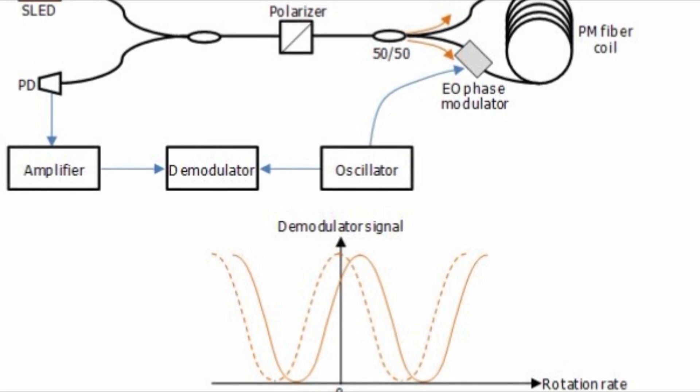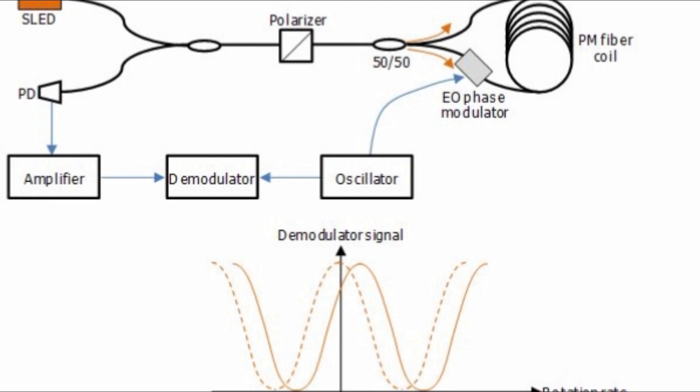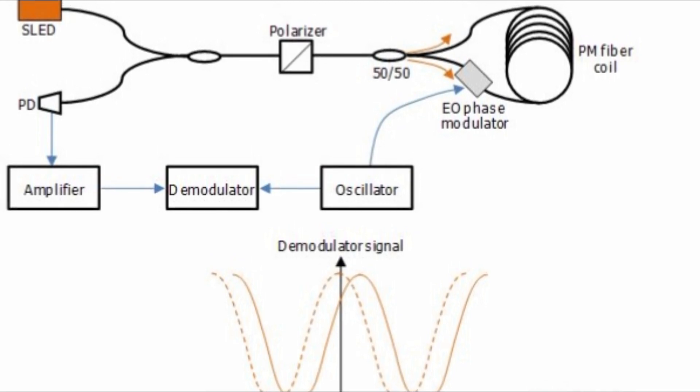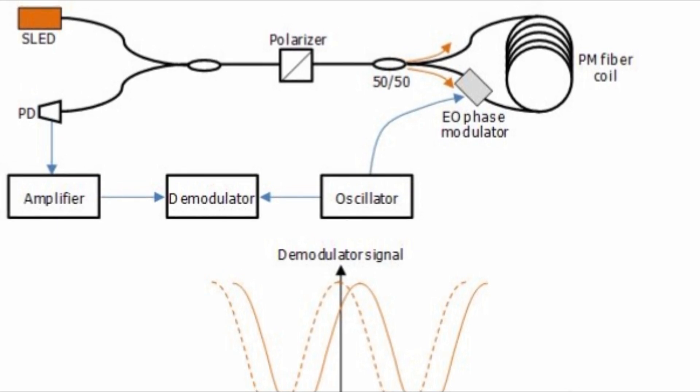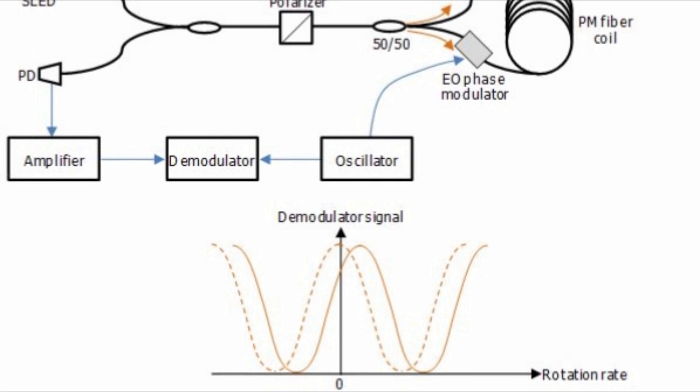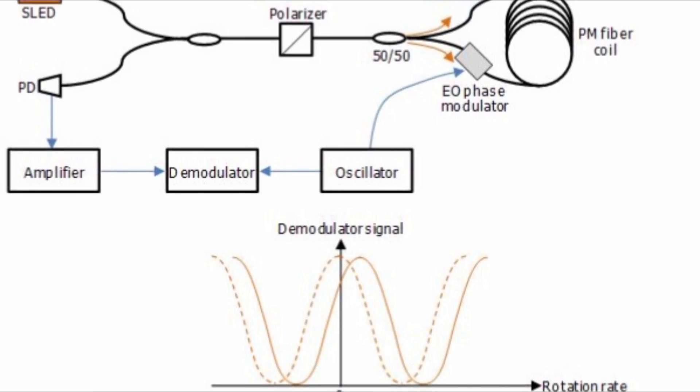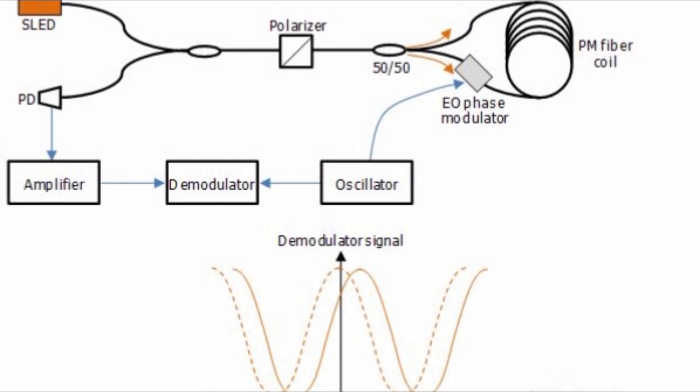Fiber optic gyroscopes are used in fiber optic gyrocompasses. Fiber optic gyroscope is used in the inertial navigation systems of some guided missiles. Fiber optic gyroscope can be a navigation aid in remotely operated vehicles and autonomous underwater vehicles. Fiber optic gyroscope is used in surveying.